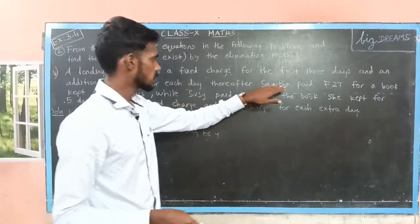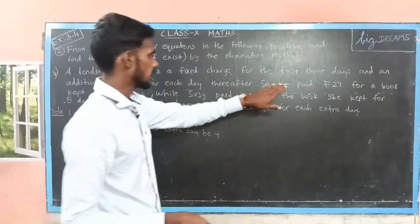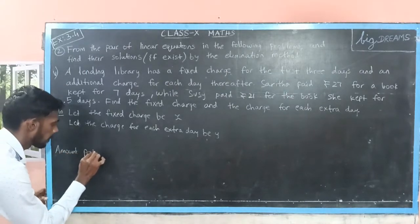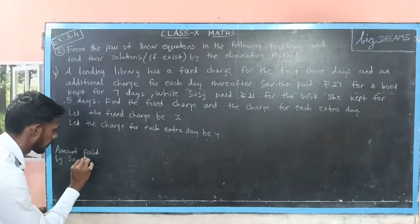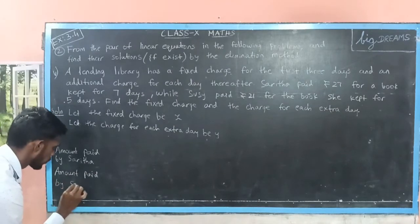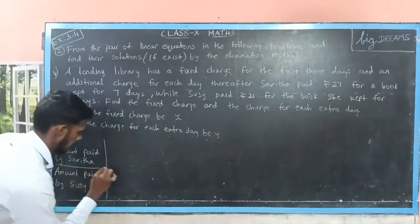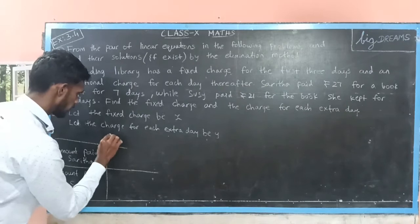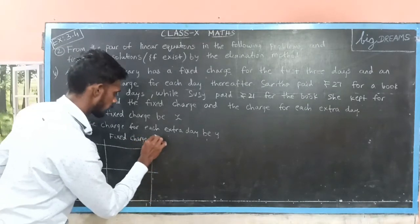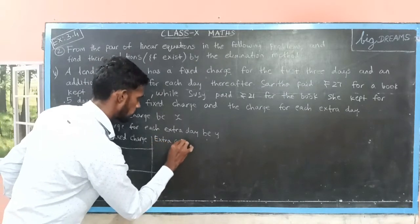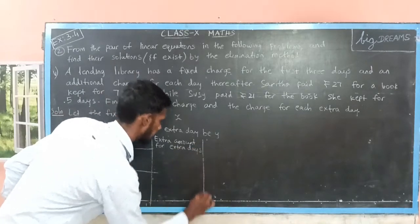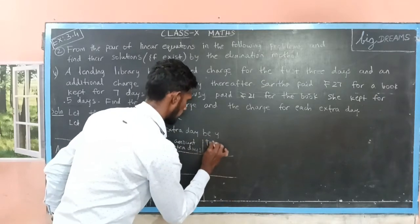In this problem, there are two characters: one is Saritha and another one is Susie. We are going to represent the given data with the help of a tabular column. Let me write the amount paid by Saritha, then the amount paid by Susie. In the columns, I am going to fill in the fixed charge, then the extra amount for extra days, then the total amount.